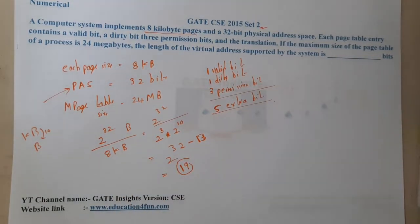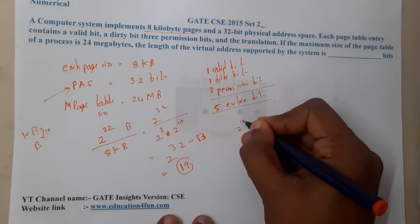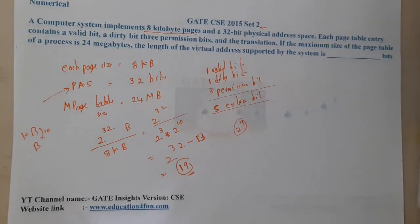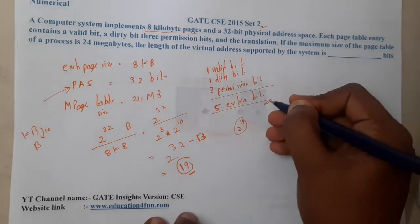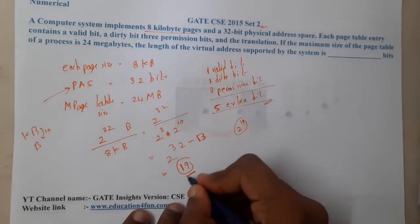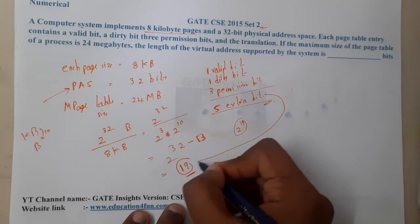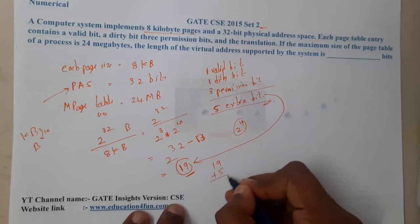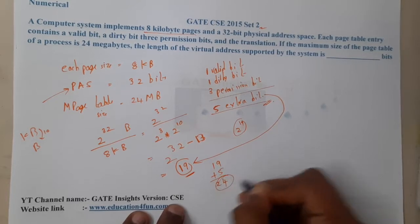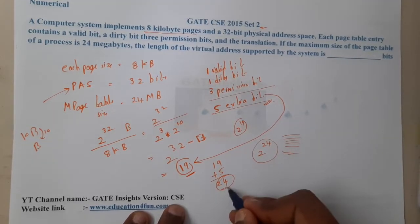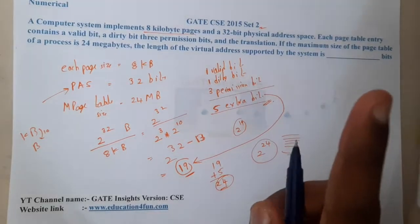So 19 bits are used to represent those entries. But the question also gives five extra bits — valid bit, dirty bit, and three permission bits. So in total, 19 plus 5 equals 24 bits are used to represent each page table entry.